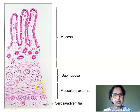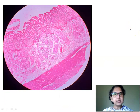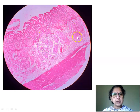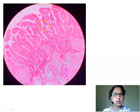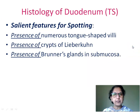Muscularis externa showing inner circular and outer longitudinal layers, and finally the serosa or adventitia. The H&E stain slide — low power view — showed tongue-shaped villi, muscularis mucosae, submucosa with Brunner's glands, muscularis externa, and serosa or adventitia. A high power view showed the tongue-shaped villi and Brunner's glands in the submucosa. The salient features for spotting a slide of histology of duodenum transverse section were: presence of numerous tongue-shaped villi, crypts of Lieberkühn, and Brunner's glands in the submucosa.